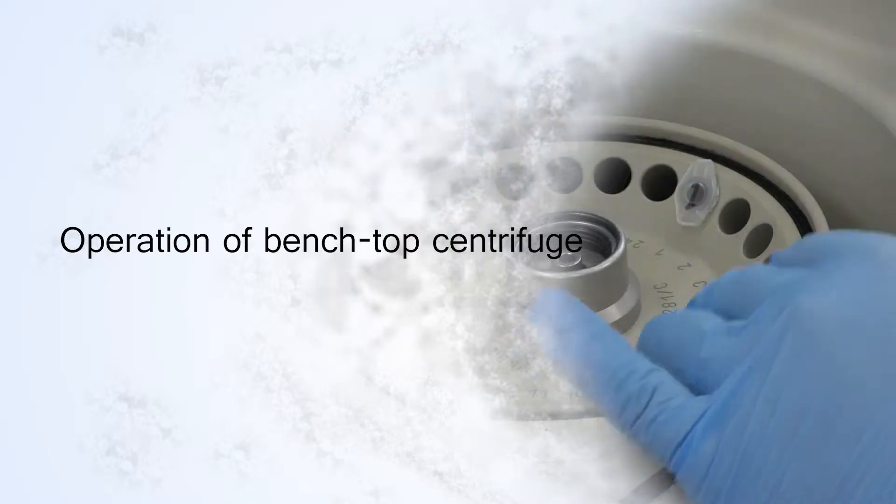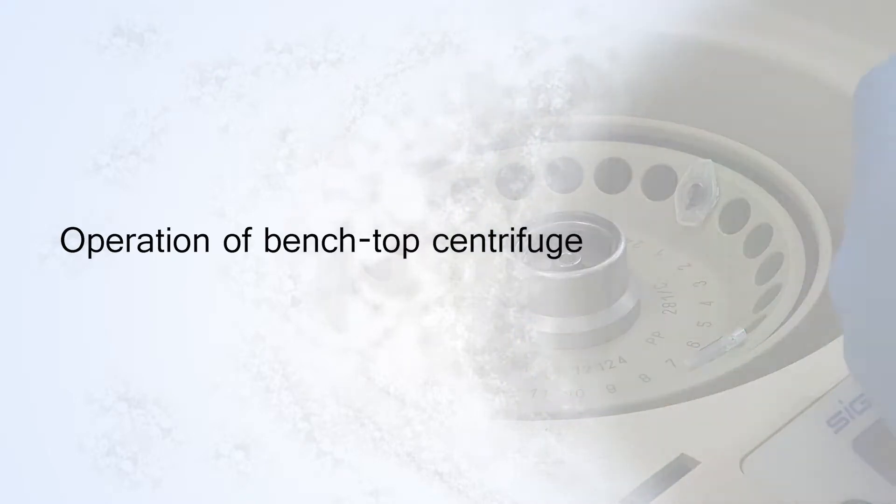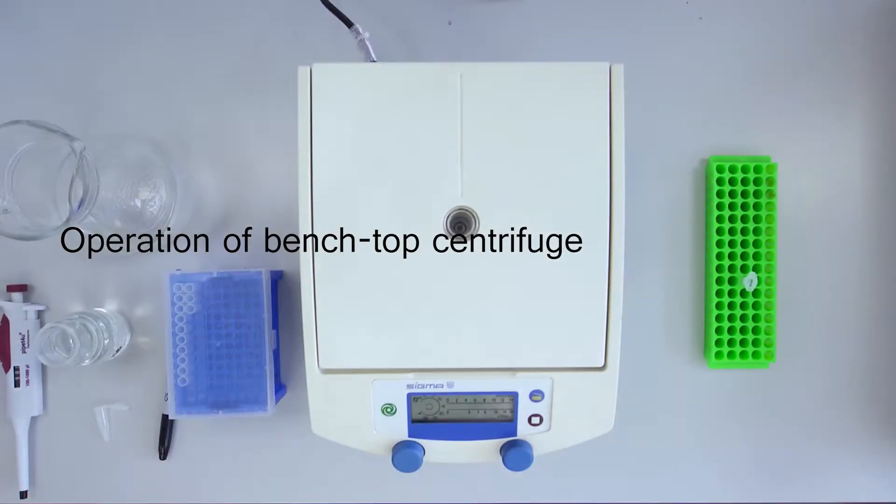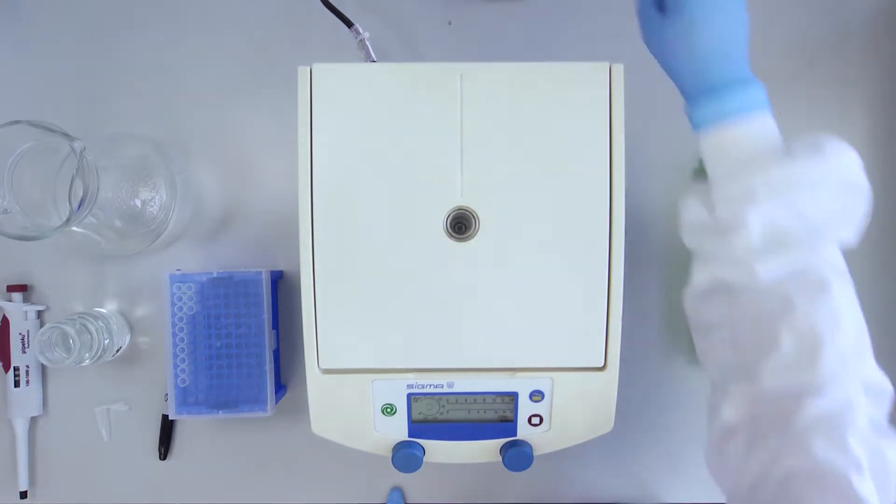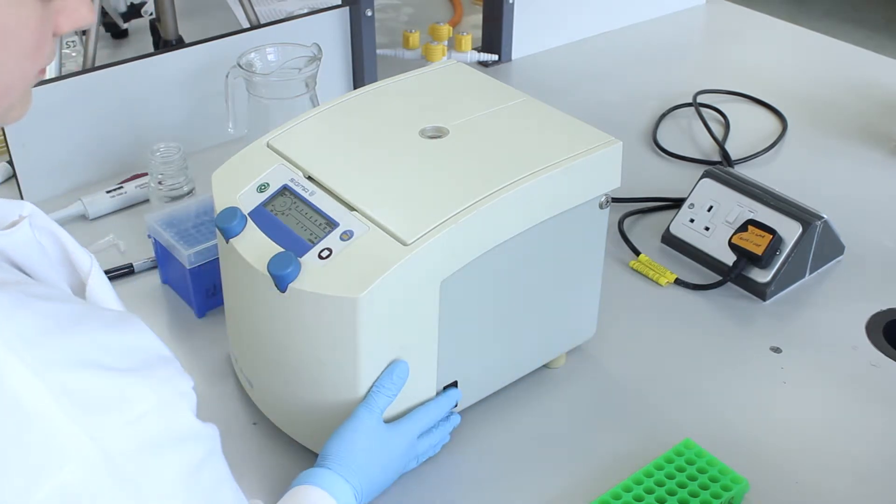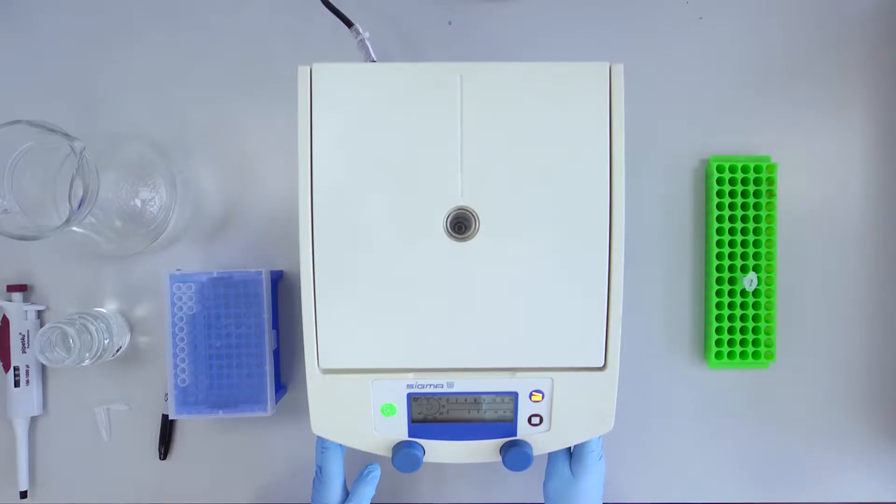To operate the Sigma Benchtop Centrifuge, make sure it is on a level surface and turn on the power at the socket and switch the centrifuge on at the switch on the side.